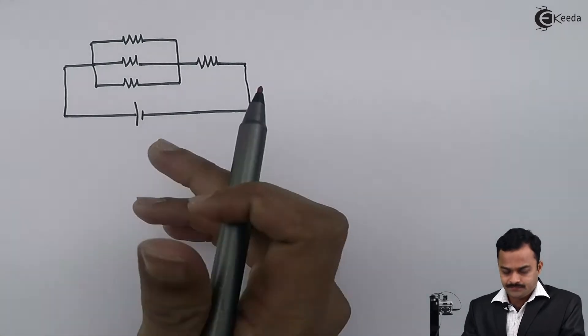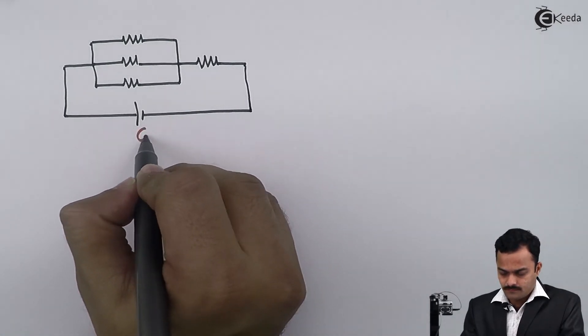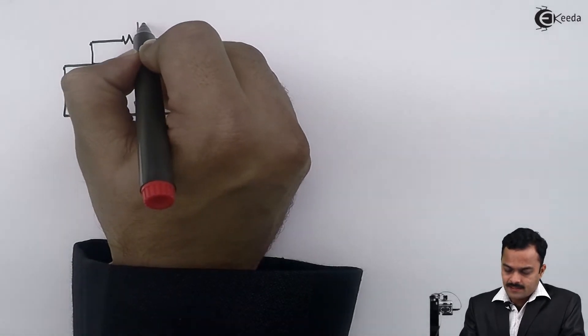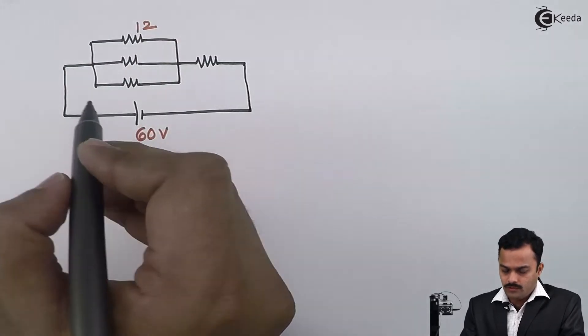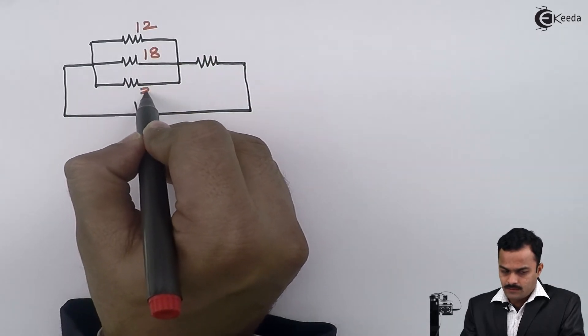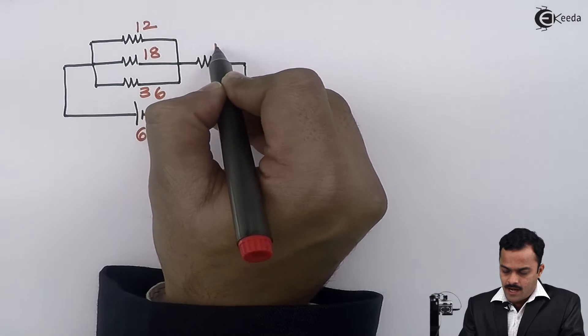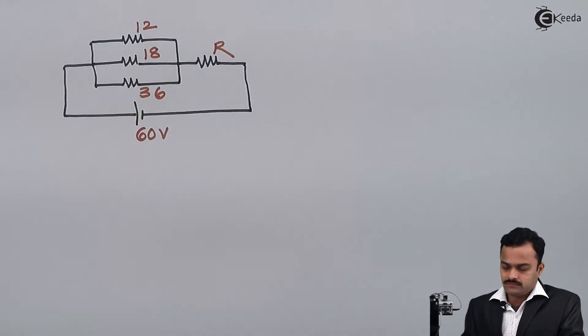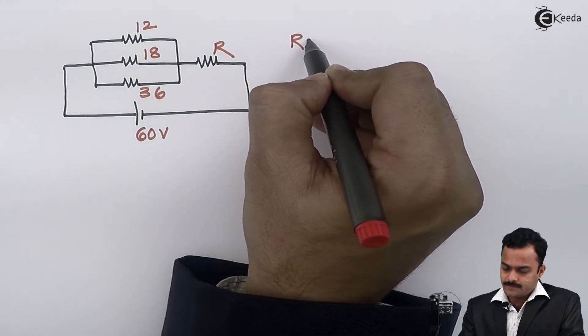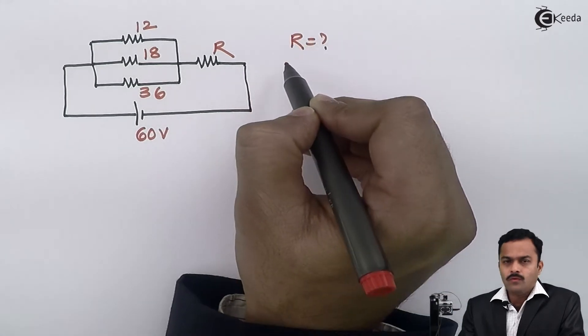I have one battery of 60 volts and three resistances connected in parallel: 12 ohm, 18 ohm, and 36 ohm. This is an unknown resistance R. We are supposed to find out the value of this R.